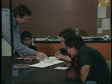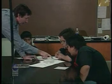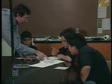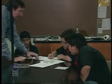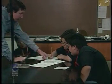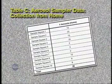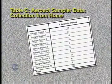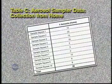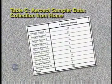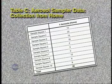When you get to school, your teachers will give you time to randomly select your ten squares. Find the average and record the data in Table C, Aerosol Sampler Data, Collection from Home, on Student Data Worksheet Number 2.